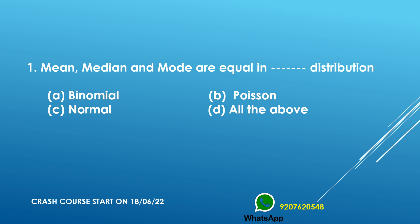First question: Mean, median and mode are equal in dash distribution. Options: binomial distribution, Poisson, normal distribution, all the above. The answer is normal distribution. In normal distribution, mean, median, and mode are equal. See option C.